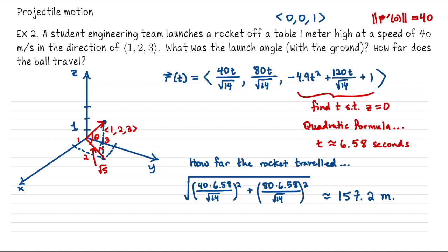Those are the examples for free fall motion and projectile motion. The first step is always to visualize what's happening as much as possible — sketch a picture and label the origin and sense of direction. Good luck solving these problems.